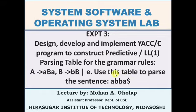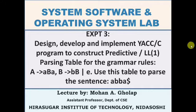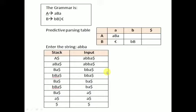Here we have to write a C program to construct a predictive LL(1) parsing table for the grammar. The grammar rules are given: A tends to ABA, B tends to BB, and B tends to epsilon. First we have to construct a predictive table and after that we have to parse the given string A, B, B, A, dollar.